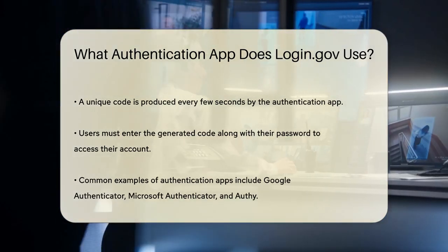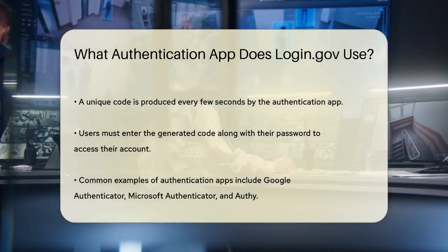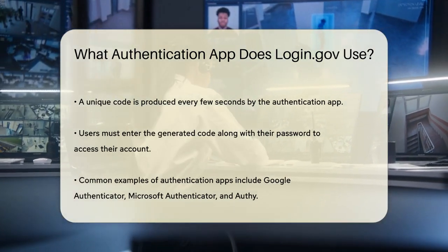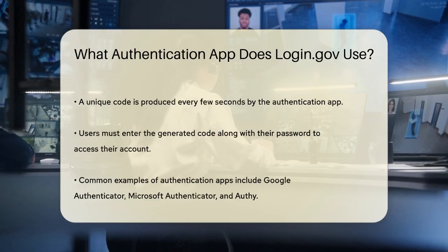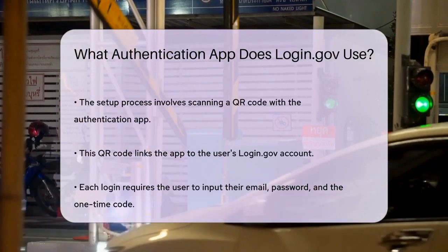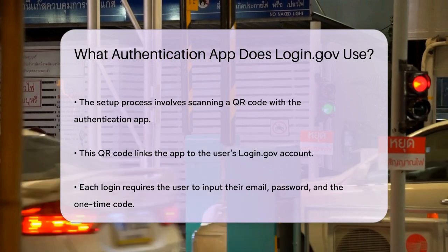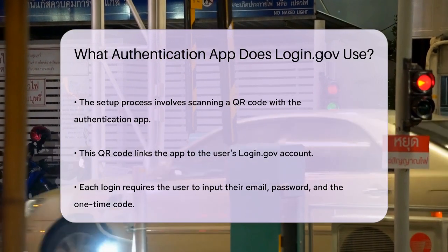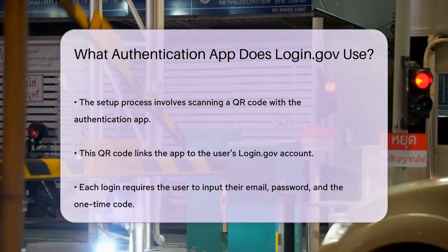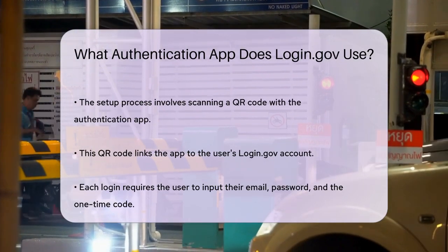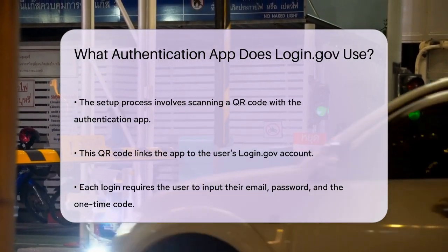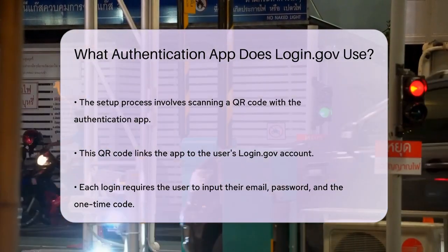These apps work by syncing with your login.gov account and generating a one-time code that you must enter to complete the login process. Once you set up your login.gov account, you can choose to add an authentication application as one of your MFA methods. You will be prompted to scan a QR code using your authentication app, which links the app to your login.gov account.